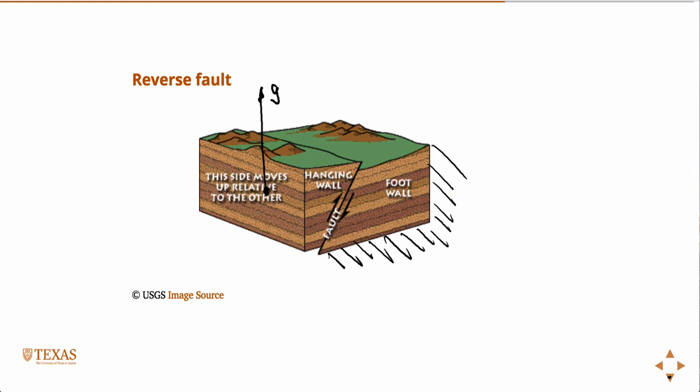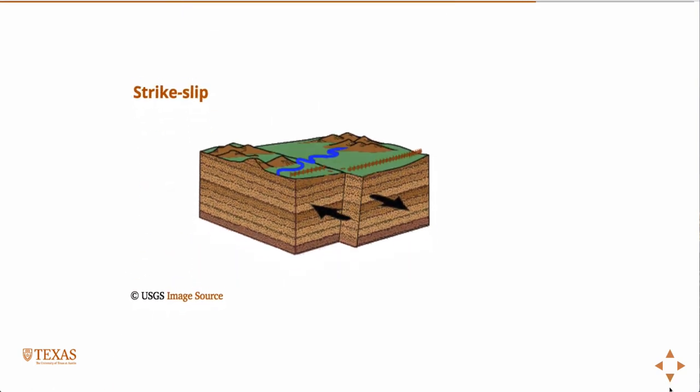And then of course the last one is the strike-slip fault, and it's fairly easy to remember because you have two plates that are sliding, slipping with respect to one another. So strike-slip fault looks like that.